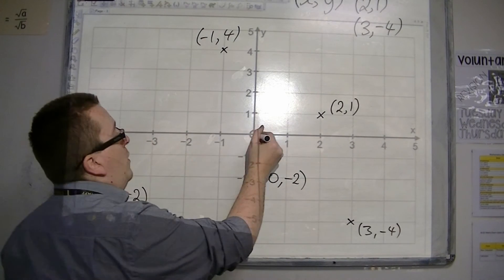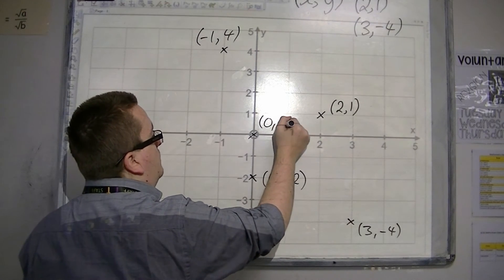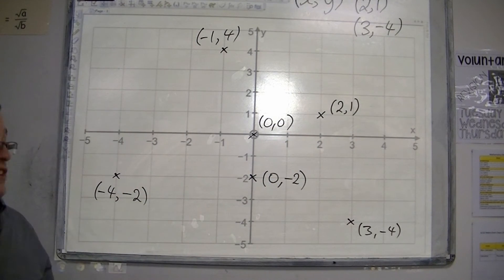So this point in the middle must be (0,0), sometimes referred to as the origin.